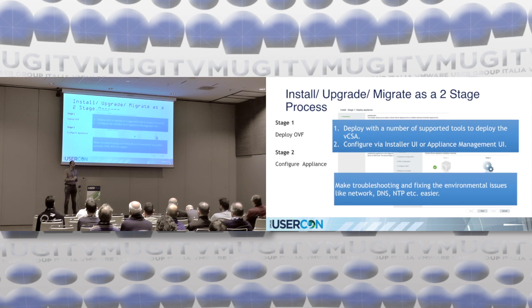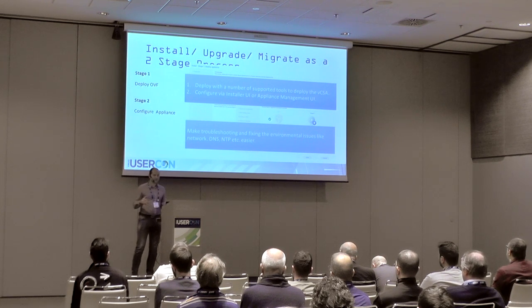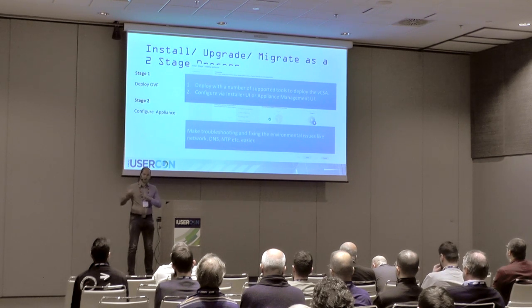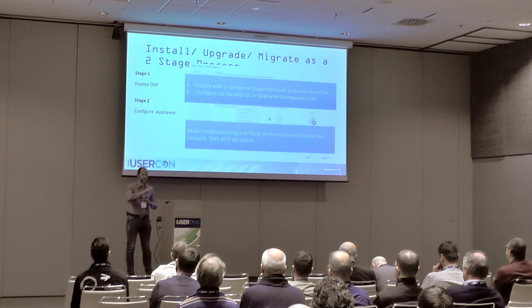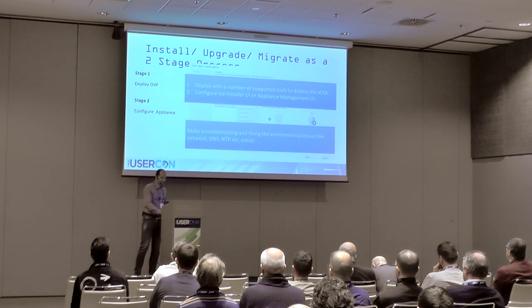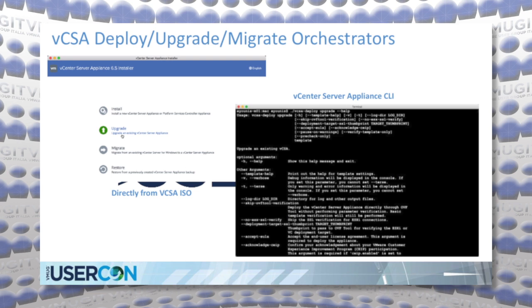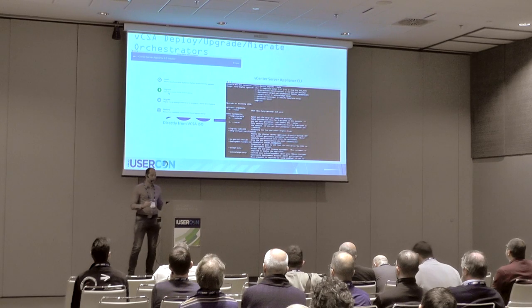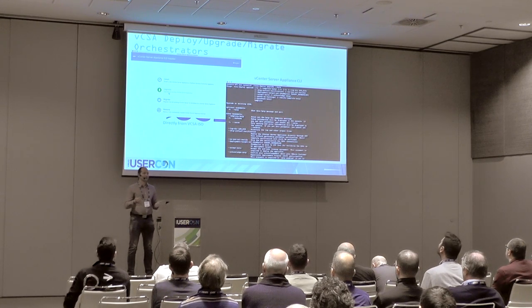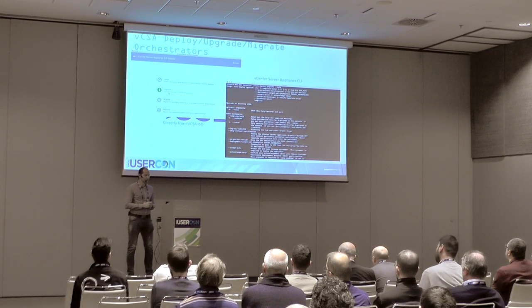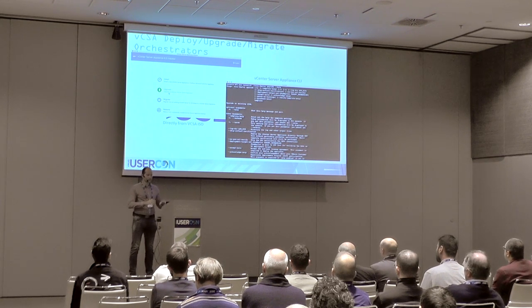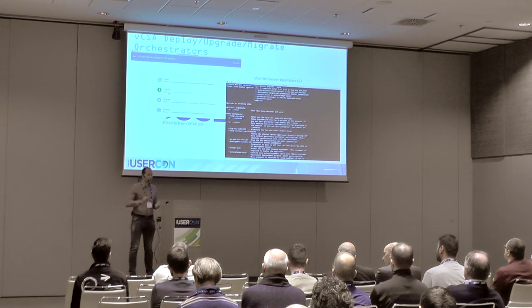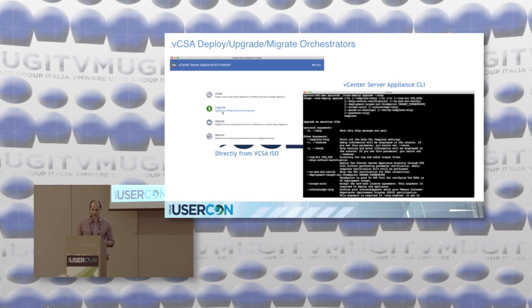This makes troubleshooting way easier. In 6.0 the installer was an external tool, and although all networking checks passed, the installation or upgrade might still fail due to different networking checks from the appliance to the source appliance. In 6.5 we have a much better troubleshooting story. We have different players for deploy, upgrade, or migrate. As part of the ISO it comes with both UI and CLI — you can use whichever you're most confident with. Both CLI and UI can be run on Linux, Windows, or Mac OS. The UI supports install, upgrade, migrate, and restore.